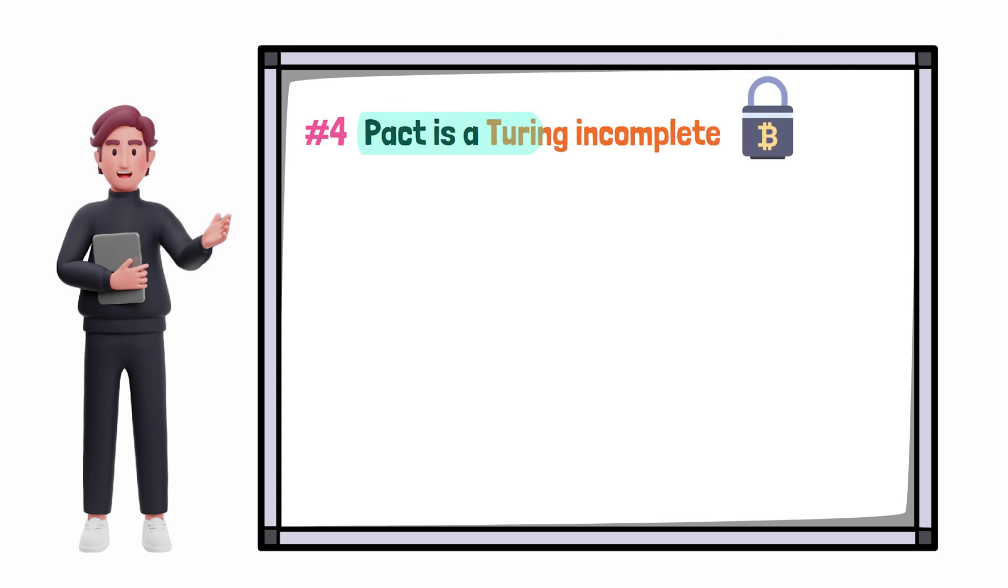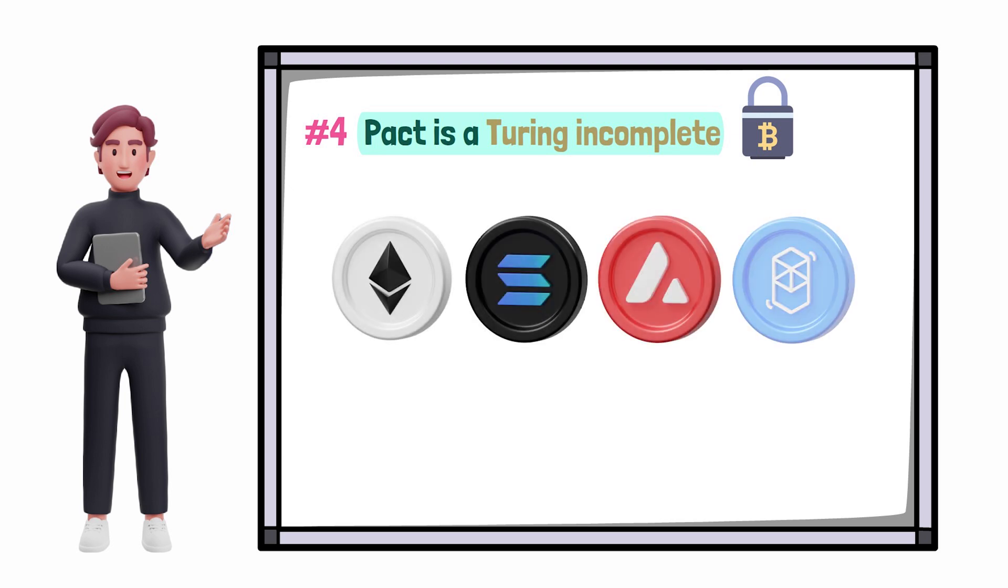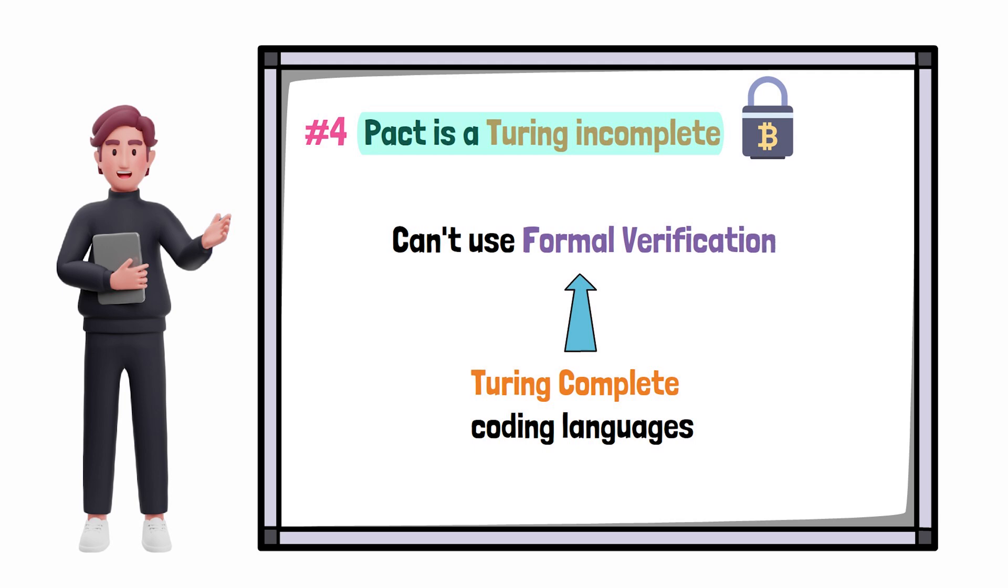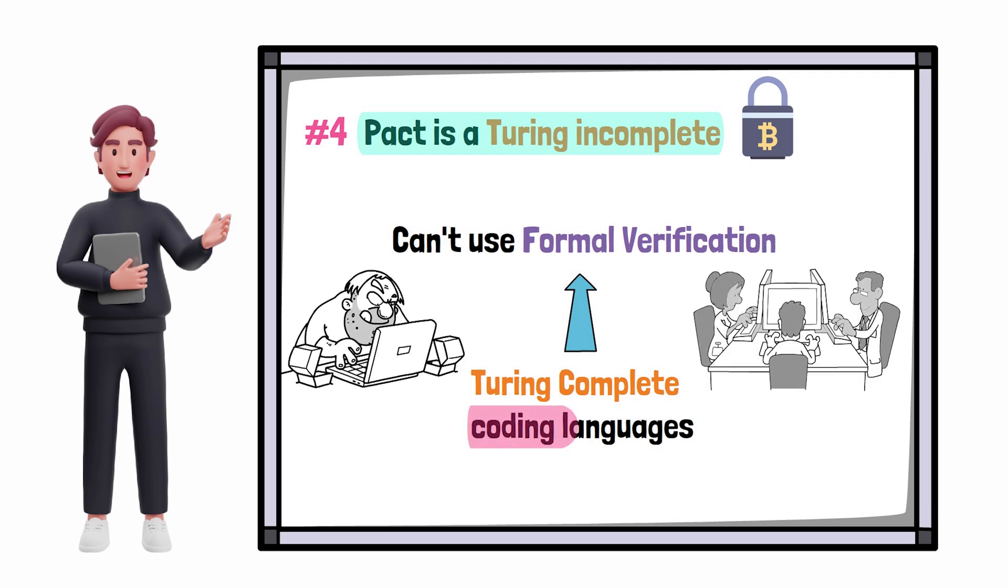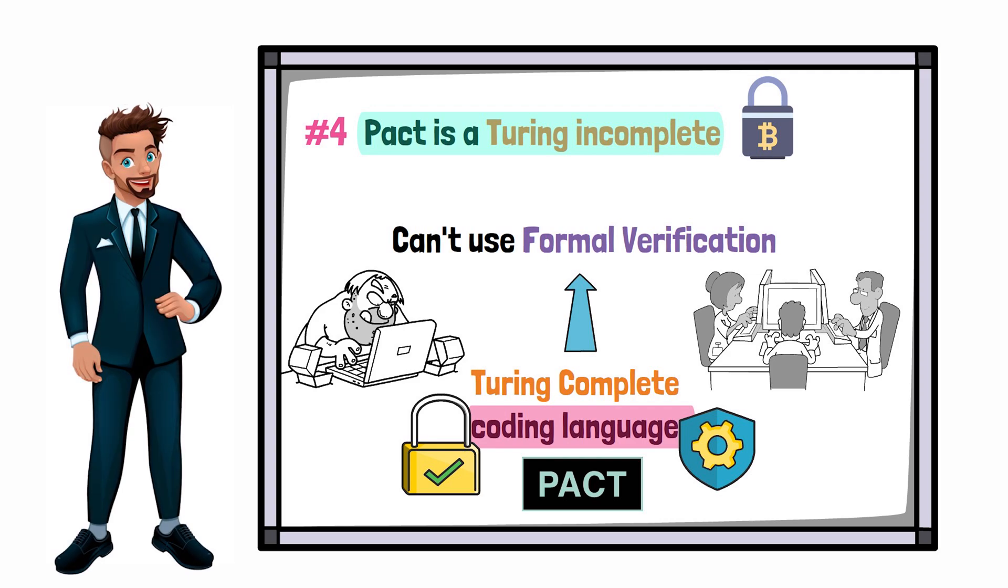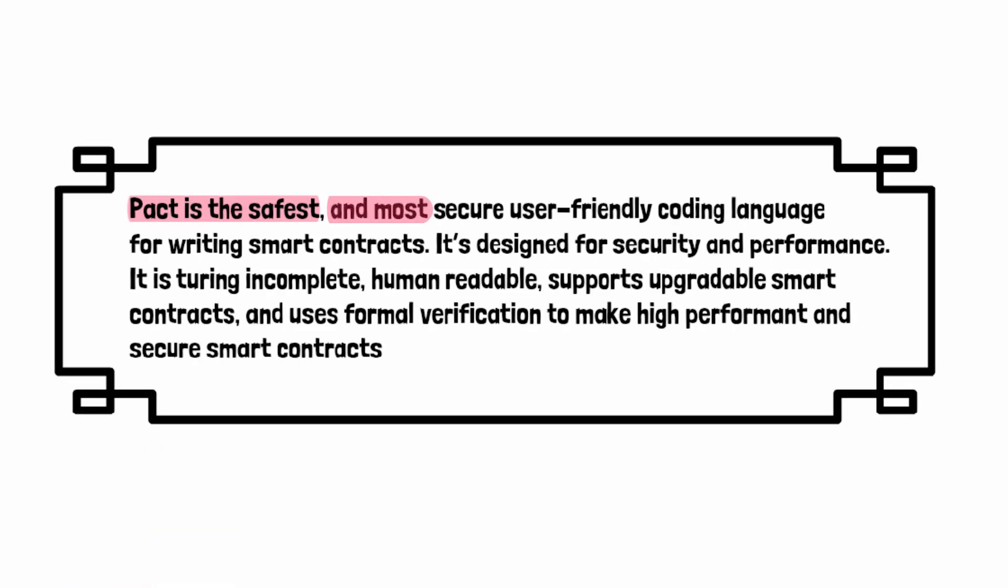And number four: Pact is Turing incomplete, just like Bitcoin. Pact is a Turing incomplete coding language. Blockchains like Ethereum, Solana, Avalanche, Phantom, and Harmony are built with Turing complete coding languages. Turing complete means that their blockchains can't use formal verification, and no matter how hard they try or how good their developers are, their coding language will never be as safe or secure as Pact. And that's just my opinion, but I'm pretty sure I'm yet to be proven wrong.